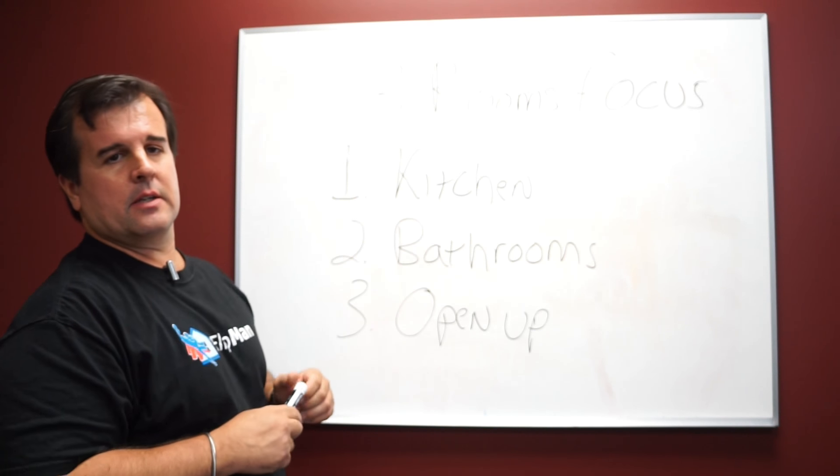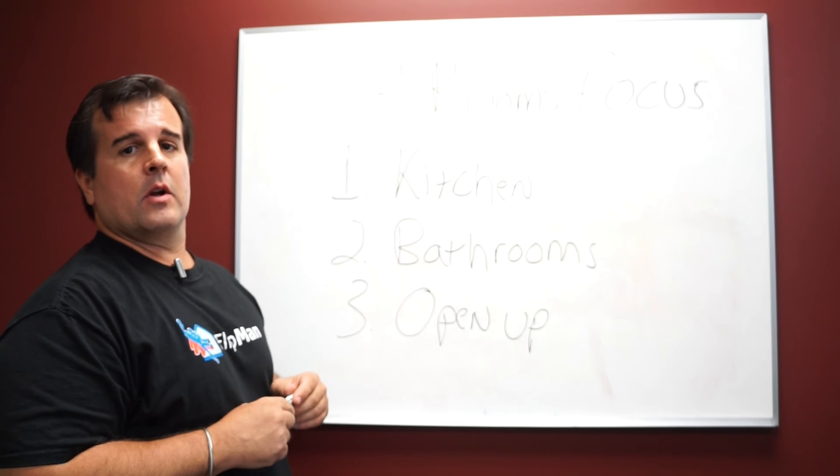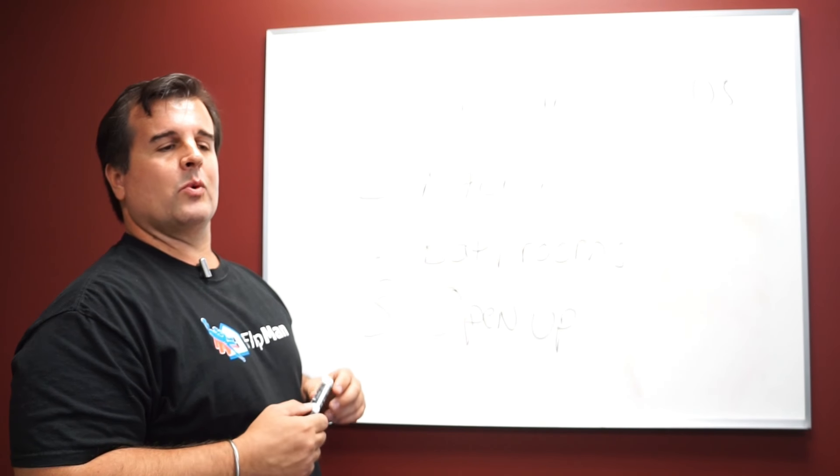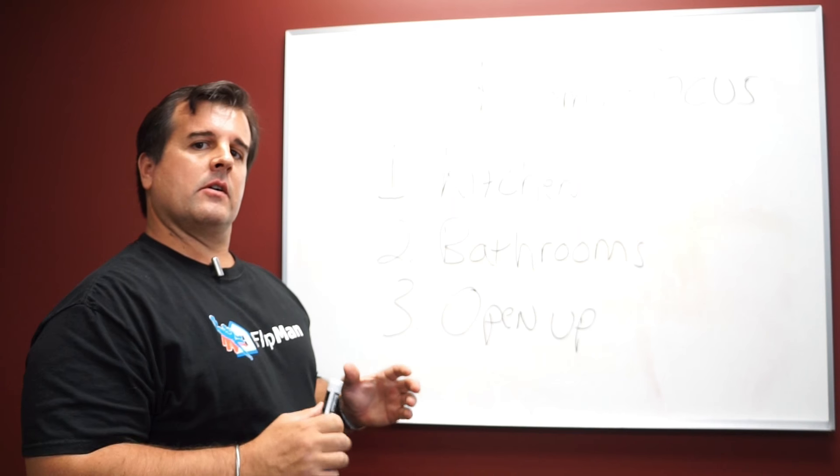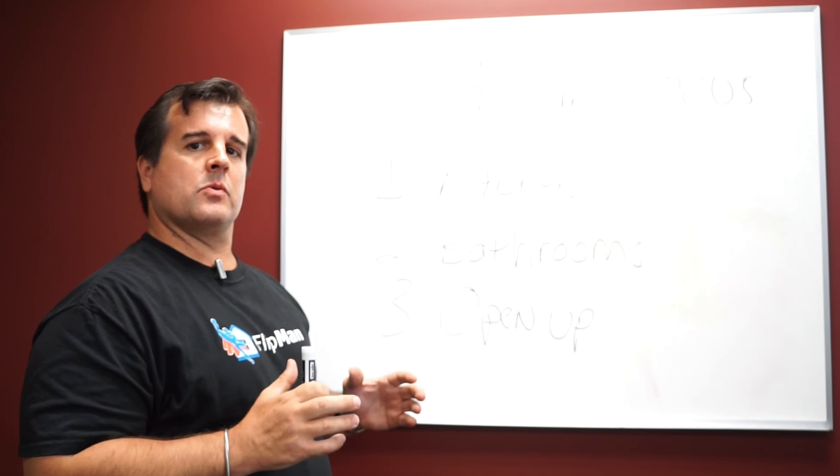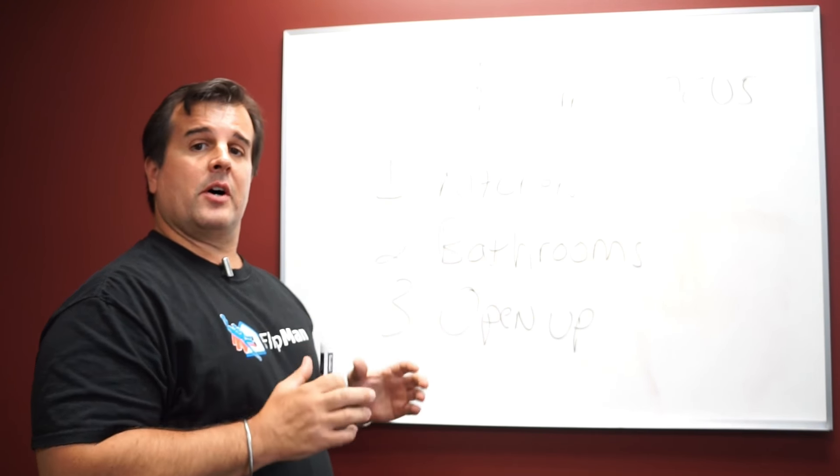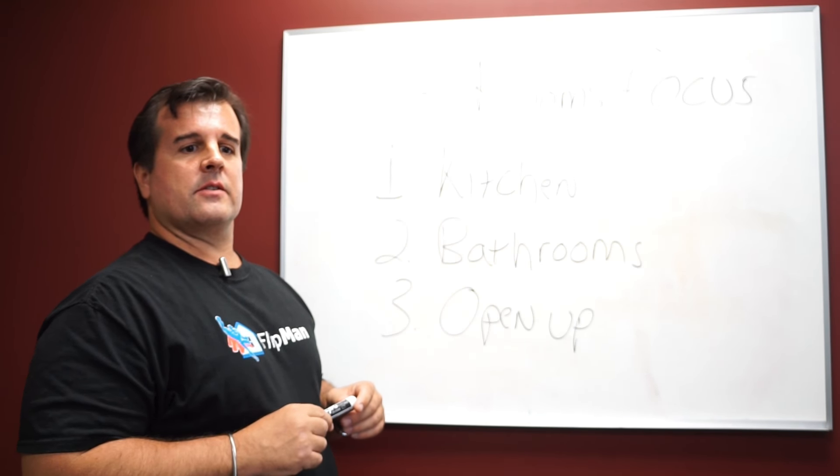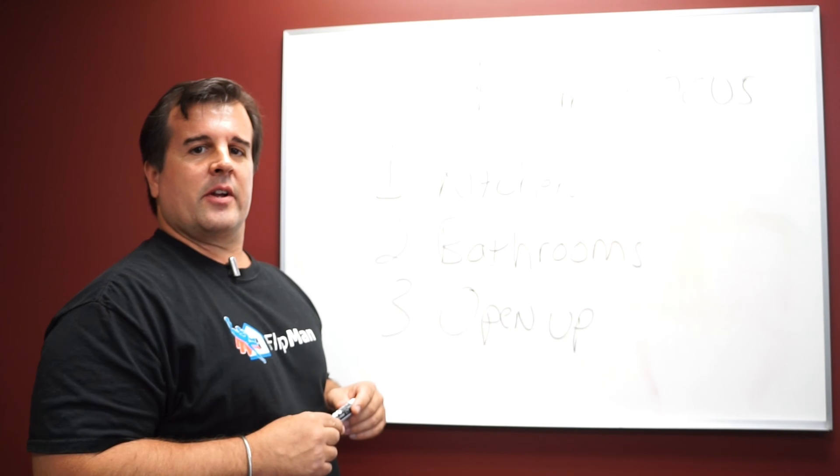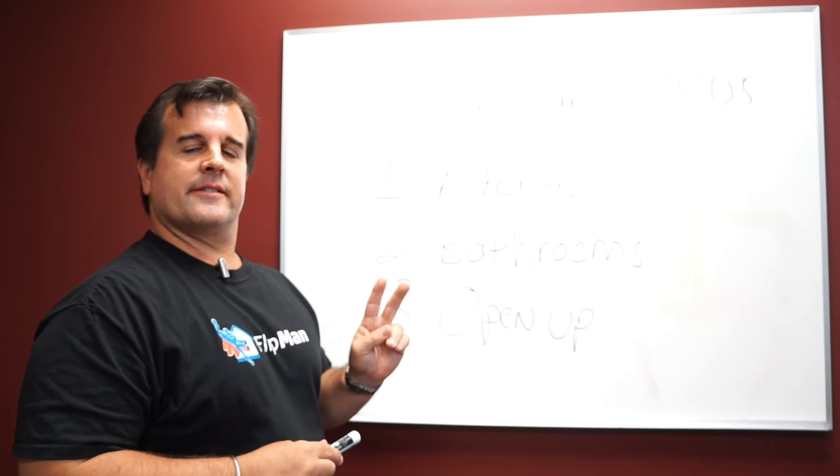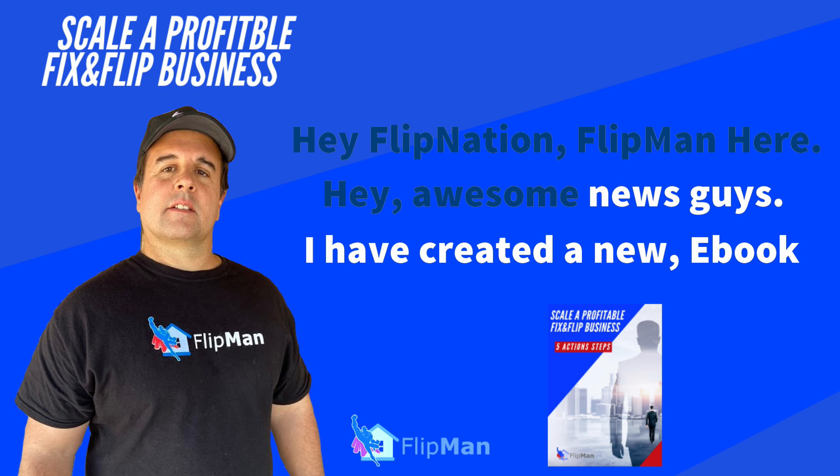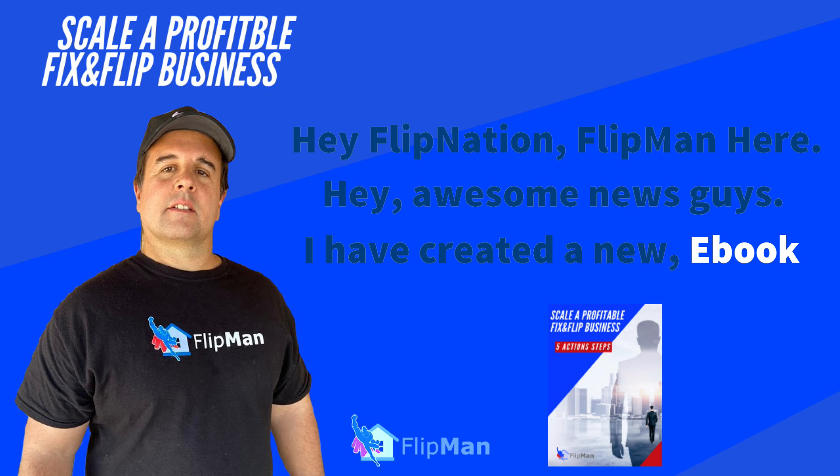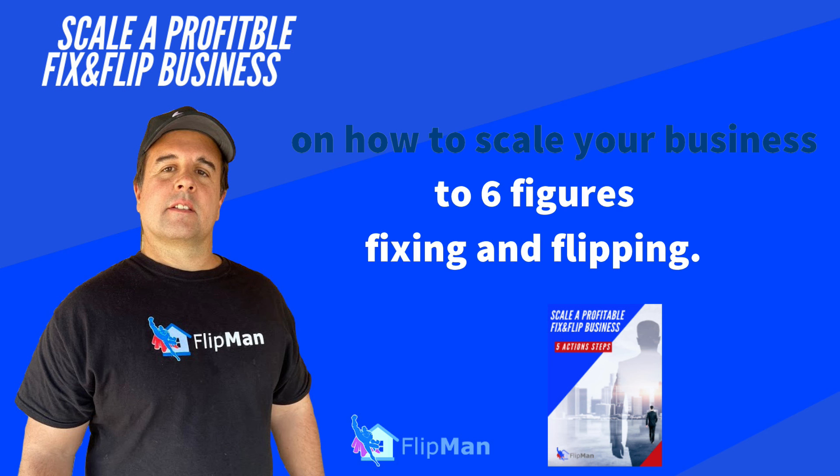So to recap, we got our three rooms. We got the kitchen. You're going to make that pop because again, people spend a lot of time in the kitchen, right? So I like the kitchen to open up to the family room where everyone can hang out. If someone's cooking in the kitchen, you could be watching TV in the family room. The whole family's hanging out. So kitchen, bathrooms, open up the floor plan. I would stay on these three. And I think you'll do real well if you just focus in on these three areas.